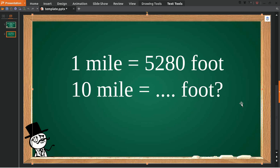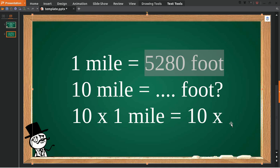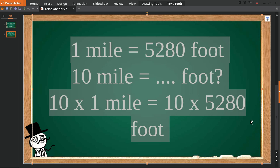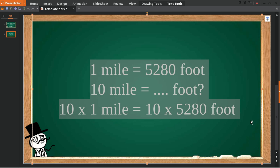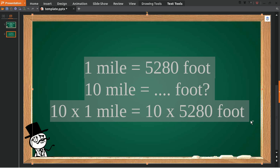To solve this problem, the first thing we need to do is multiply 10 by this number. Then give it an equal sign, and because we have 10 on the left, we must have 10 on the right as well. Then we multiply it with this number.